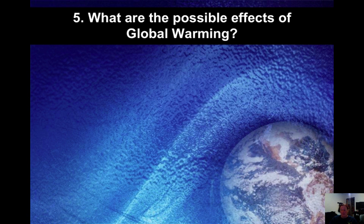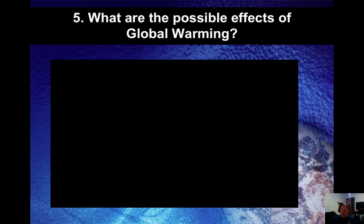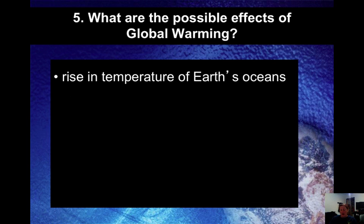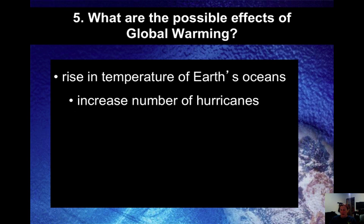What are the possible effects of global warming? If we increase the average temperatures, one concern is rising temperatures in Earth's oceans. Hurricanes feed off of warm ocean water, so the more we increase ocean temperatures, scientists suspect that would give rise to an increase in the number and strength of hurricanes. Some scientists believe we are currently experiencing this with hurricanes like Hurricane Sandy, which affected us much later in the year — end of October — than is typical for our location.